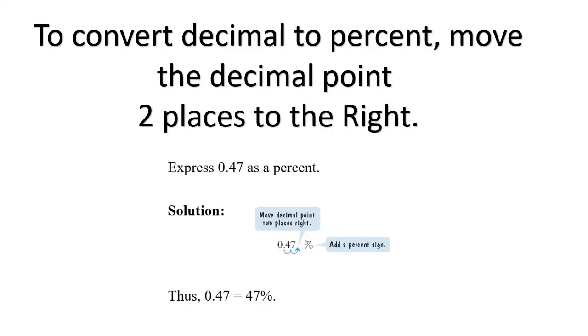when you convert a decimal to a percent, you always move that decimal point two places to the right. Like in this example, the 0.47, notice that decimal point is moved two places over to the right, so that 0.47 is the same thing as 47%.